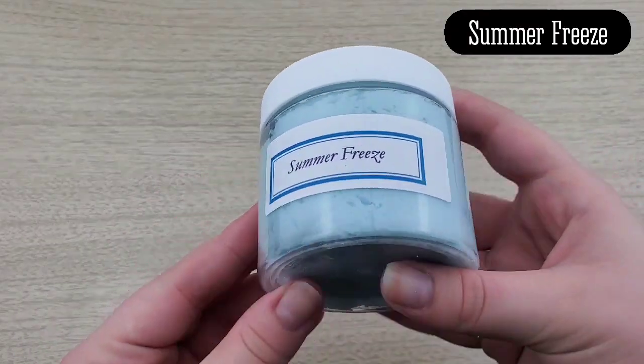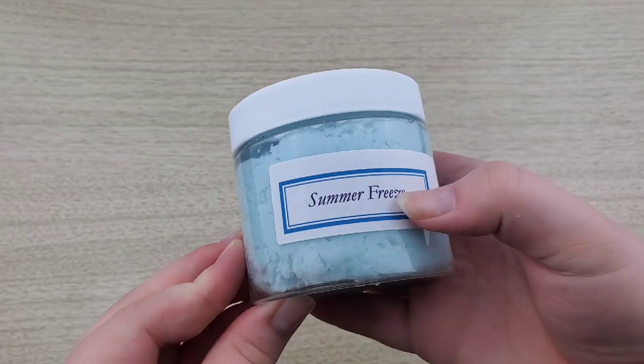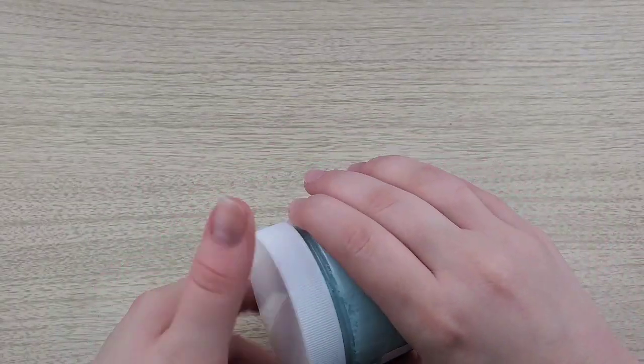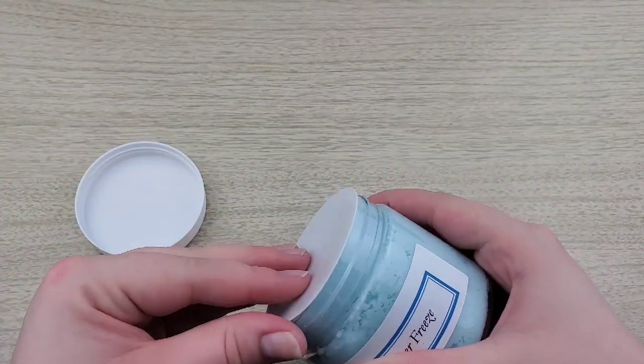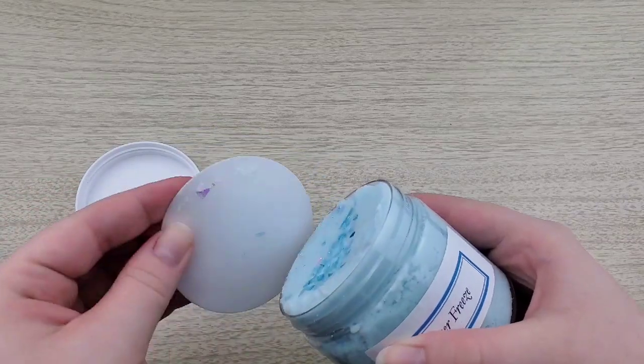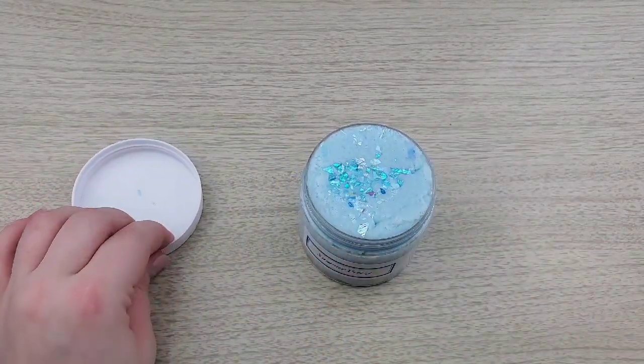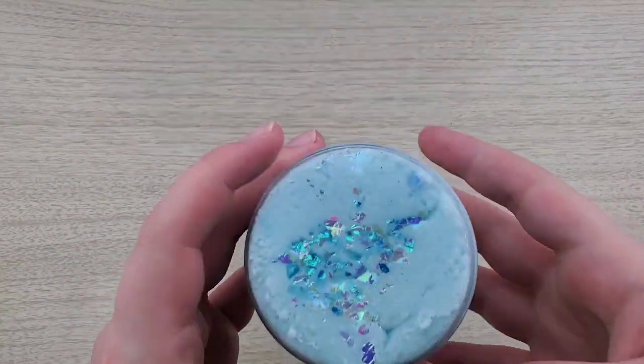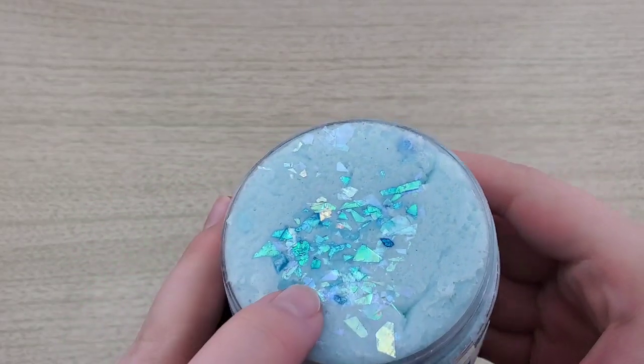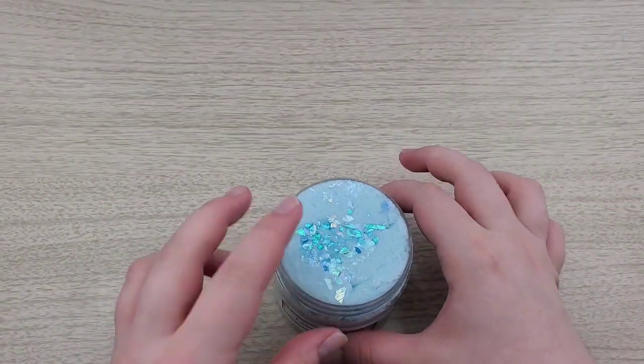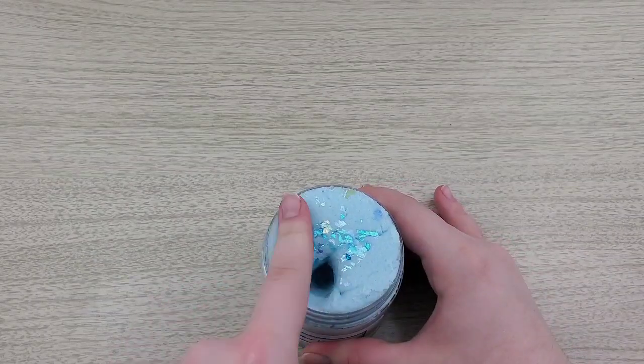This next slime is Summer Freeze and just by the name I thought it would maybe be a snow fizz or an icy slime, but I was surprised that it is a cloud slime and pleasantly surprised. This is a lovely sky blue color and it has some iridescent flakes on top that are also blue.